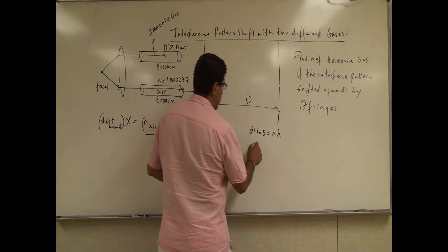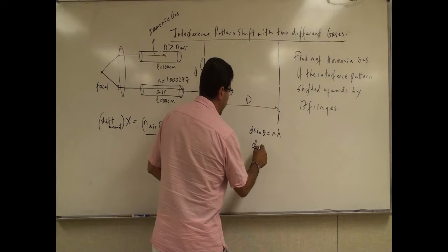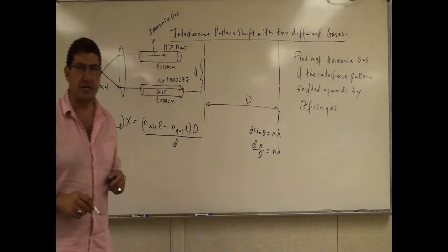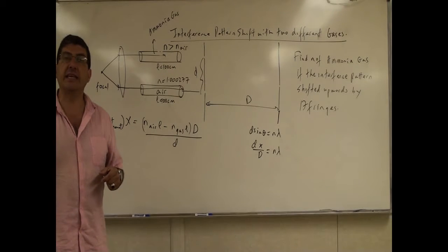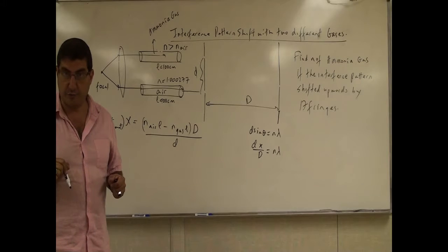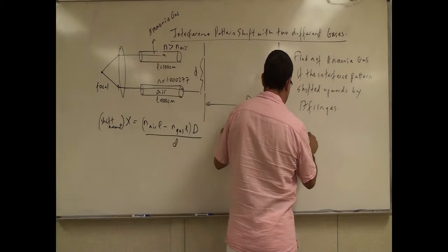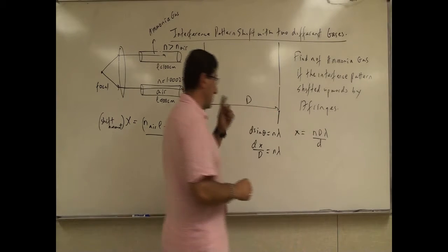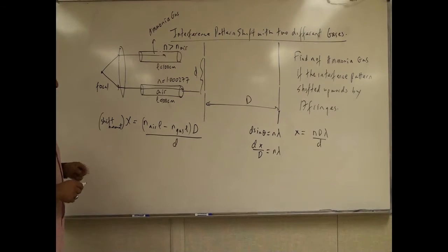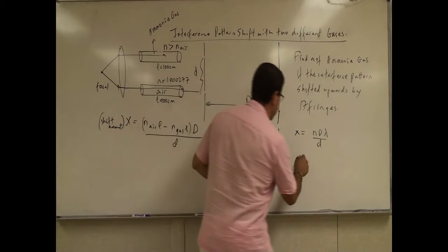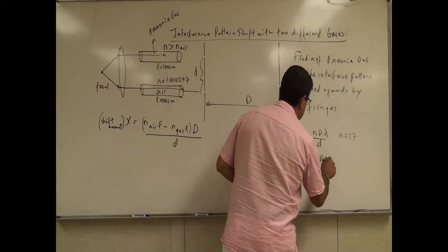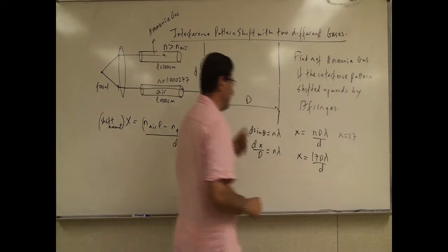D sine theta is equal to N lambda. Then we say D sine theta is equal to X divided by D is equal to N lambda. So this gives us the X position for any N fringe, for bright fringes. So X is equal to N D lambda over big D. So what does it mean that the shift amount is 17 complete fringes? Well that means for the X of the 17th fringe, N is equal to 17. So 17 D lambda over big D.